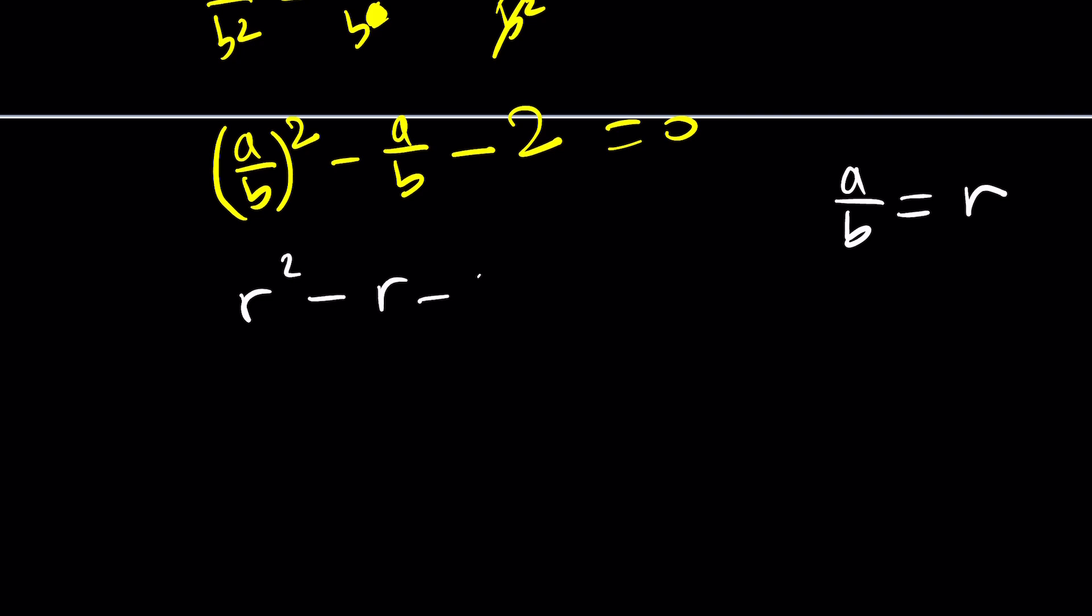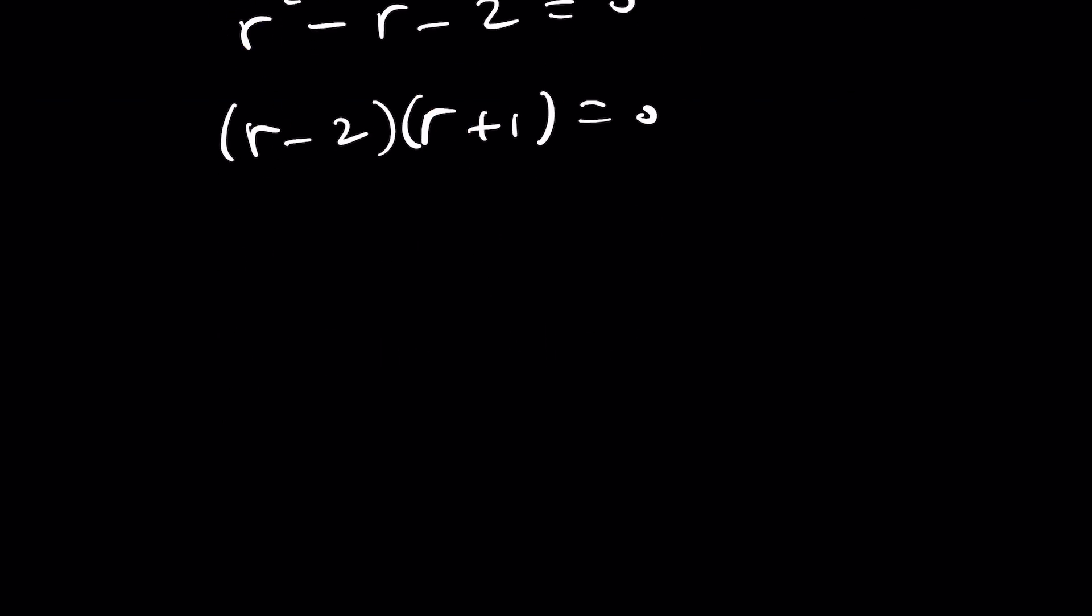This becomes r² - r - 2 = 0. But this is a quadratic, and it's very easy to solve. You can write it as (r-2)(r+1) = 0. From here, you get r = 2, which is a/b, or r = -1, which is a/b. And you can just plug these into the expression that we're being asked for, and then you're going to get the exact same solutions.